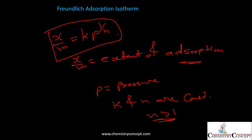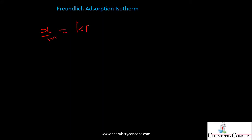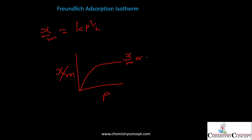This equation is known as the Freundlich adsorption equation. When we plot the extent of adsorption (x/m) versus pressure, we get a characteristic curve. At low initial pressure p₀, x/m is directly proportional to pressure p. At intermediate pressure, x/m is proportional to p^(1/n), where n is greater than 1.